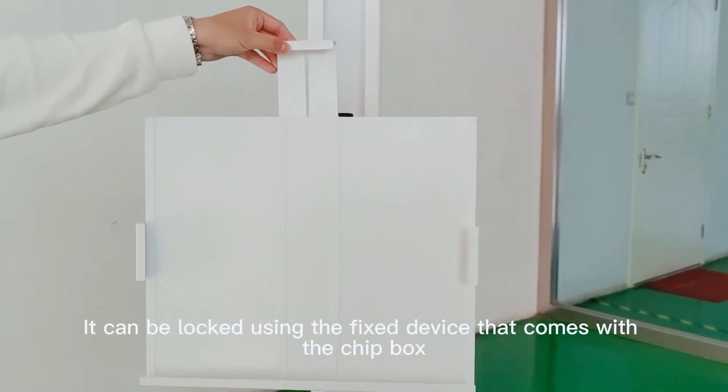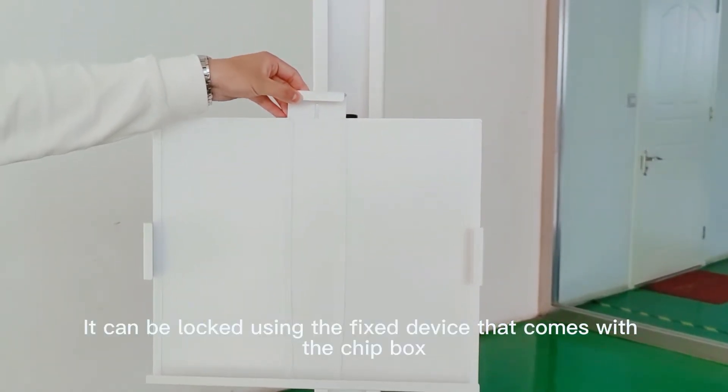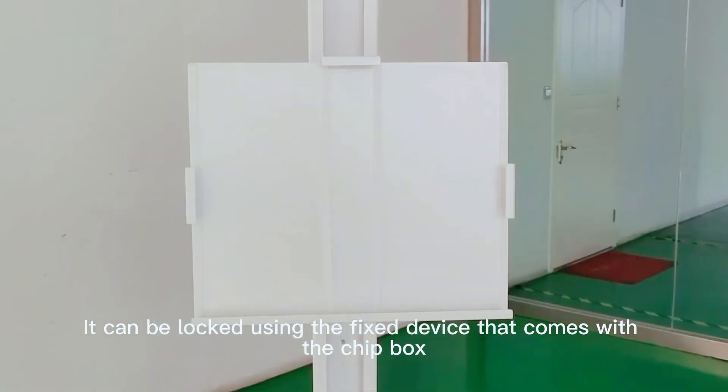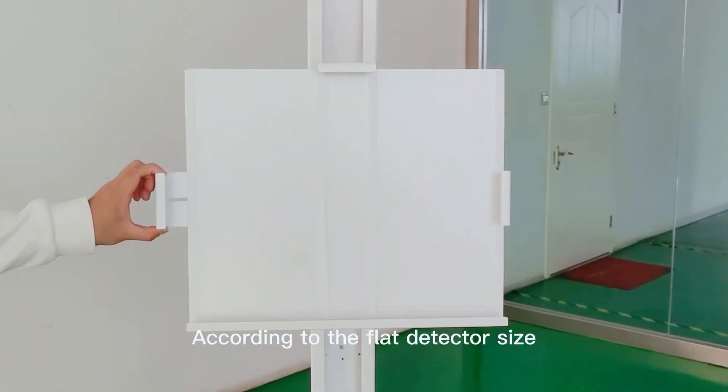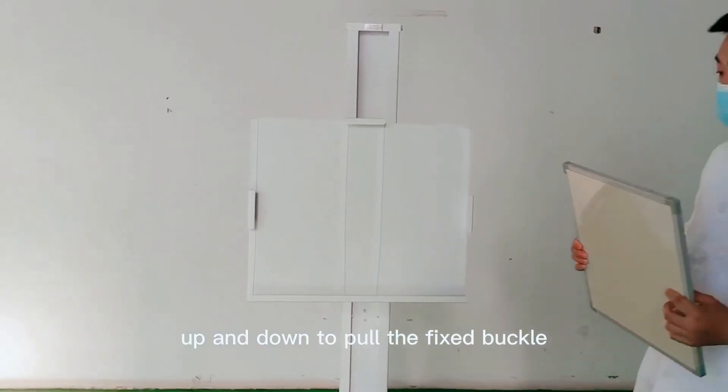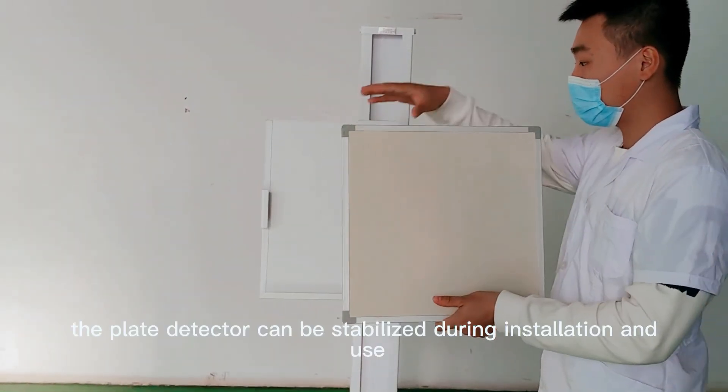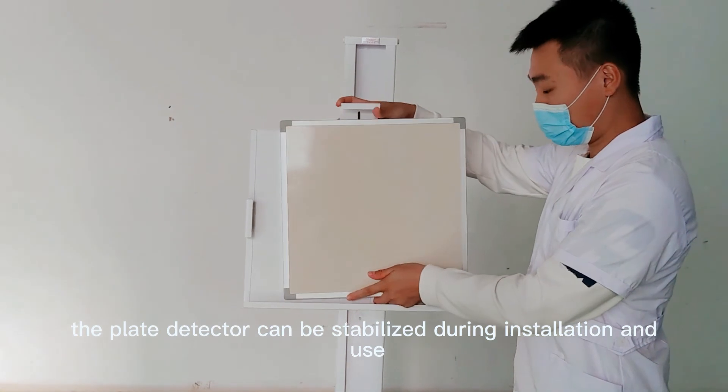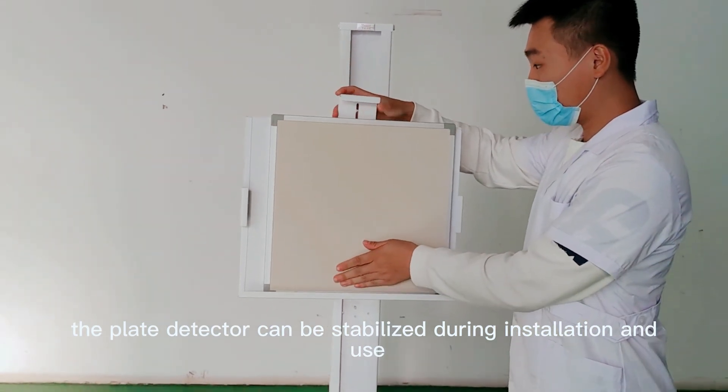It can be locked using the fixed device that comes with the chip box. According to the flat detector size, pull the fixed buckle up and down. In this way, the plate detector can be stabilized during installation and use.